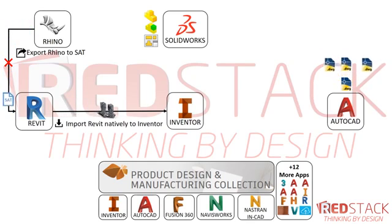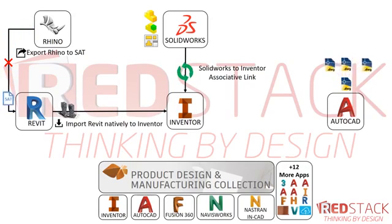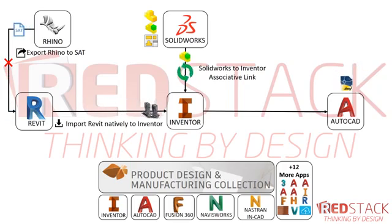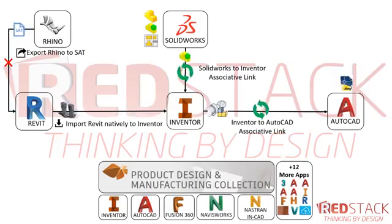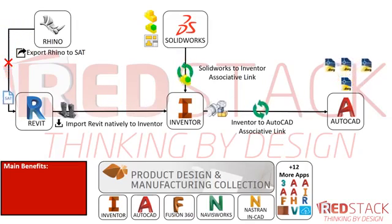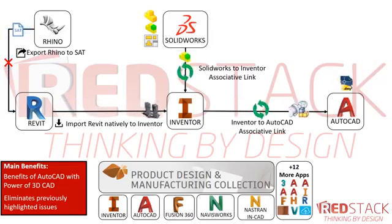Now I can drop a Revit project natively into Inventor. In terms of SOLIDWORKS, SOLIDWORKS has an associative link with Inventor, so I can place my 3D model straight into Inventor from SOLIDWORKS, and if the SOLIDWORKS model changes it automatically updates inside Inventor. So now for fabrication level drawings, I can send that 3D model straight to AutoCAD, and if the 3D model changes it automatically updates inside AutoCAD. I can now produce very powerful 2D documentation in the file format everyone likes.